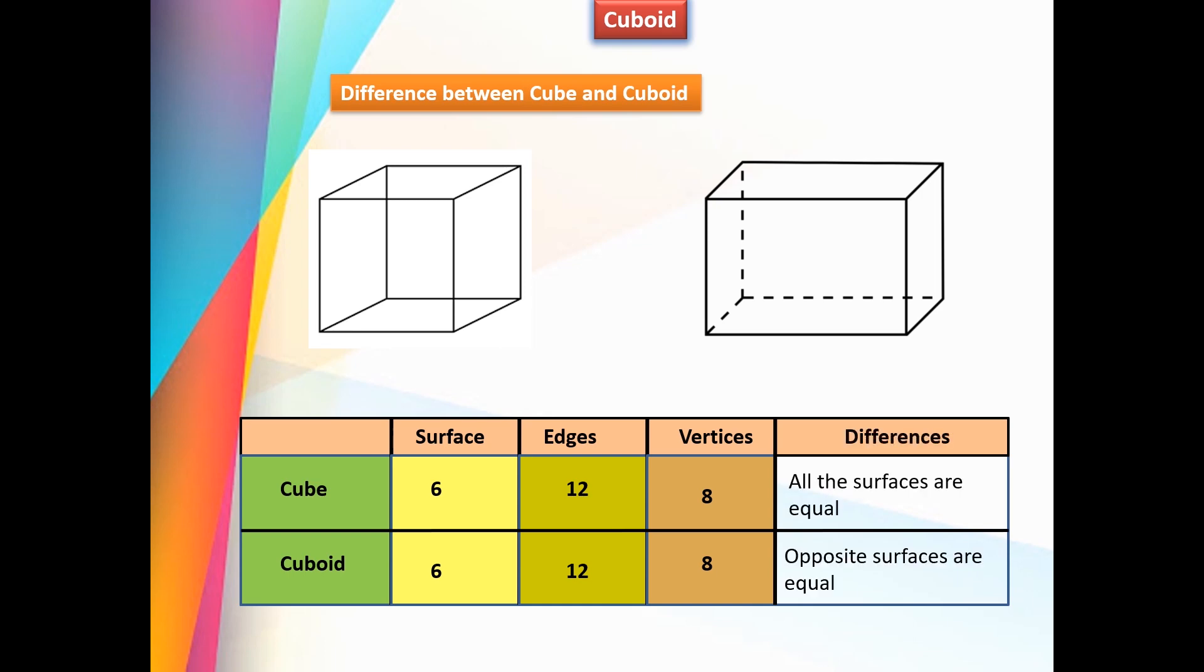Let us see the differences. All the surfaces are equal in a cube, whereas opposite surfaces are equal in a cuboid.